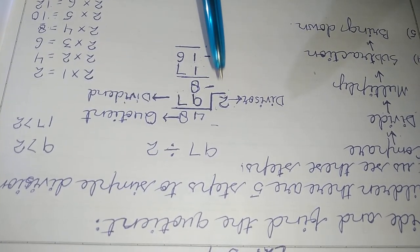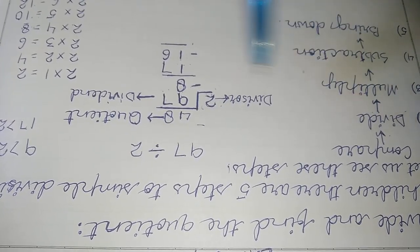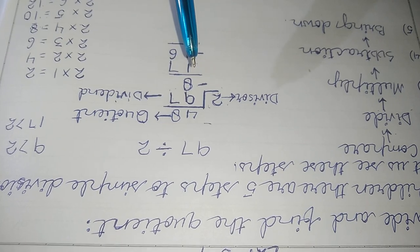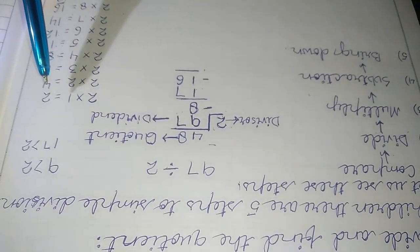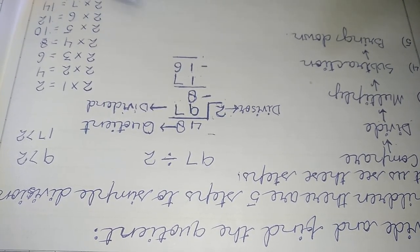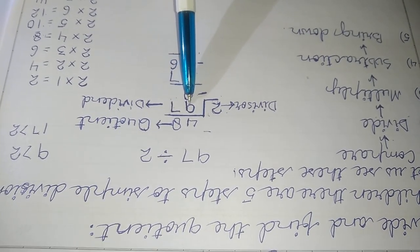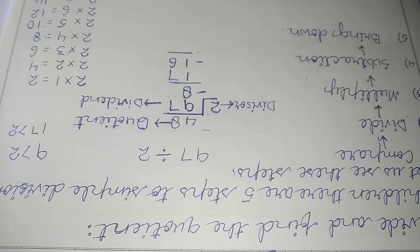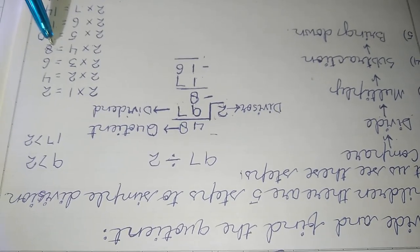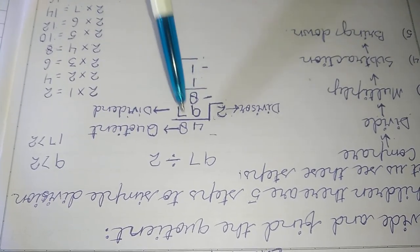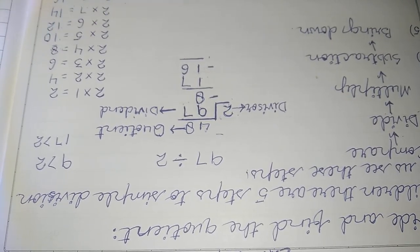Step 2 is to do the division. Since the divisor is 2, we use the table of 2 to find the product which is equal to or less than, and nearest to, the digit 9. The nearest product is 8, so we write 4 above 9, because 2 times 4 equals 8.